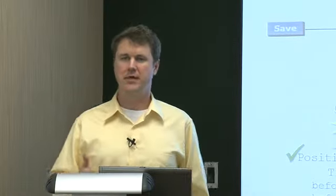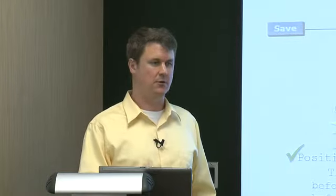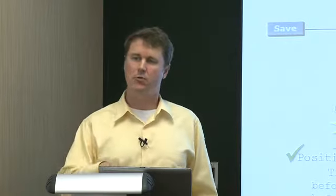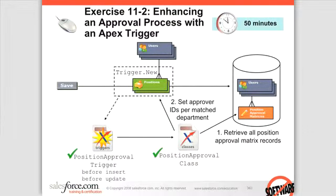A basic way to implement that would be to allow the person editing or creating the record to populate those fields by clicking on the lookup icon to select the associated users who would then perform the approval steps. What we're going to do instead is code a trigger and a class that will do a lookup in a different custom object and automate the population of those approver fields.